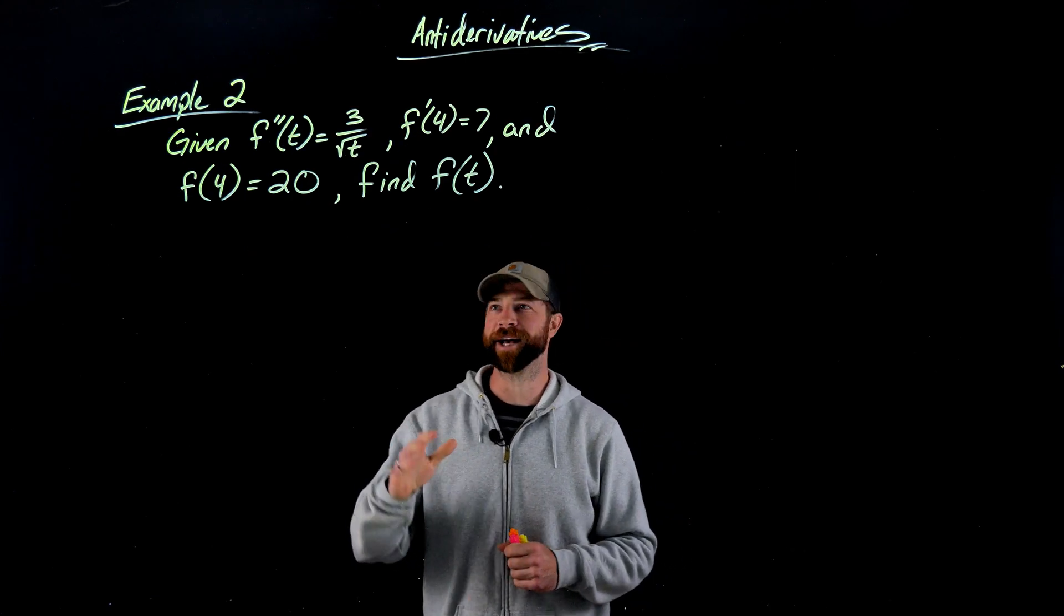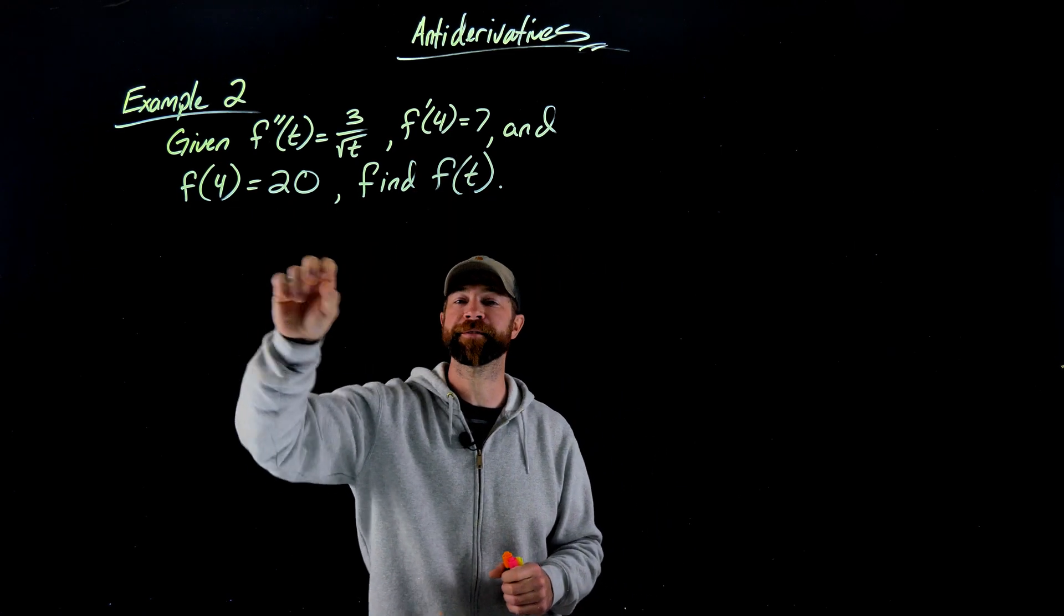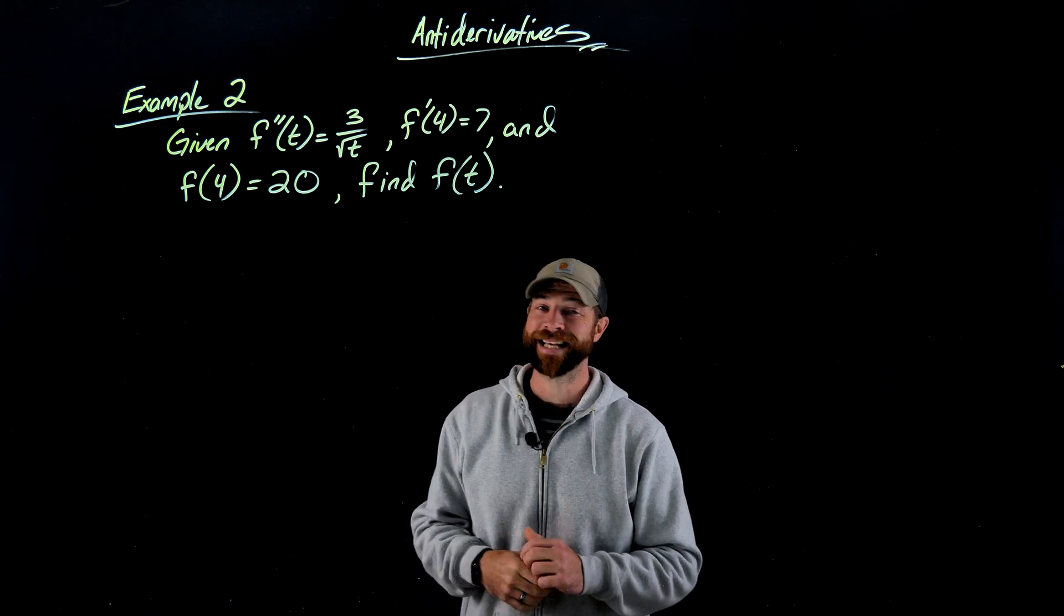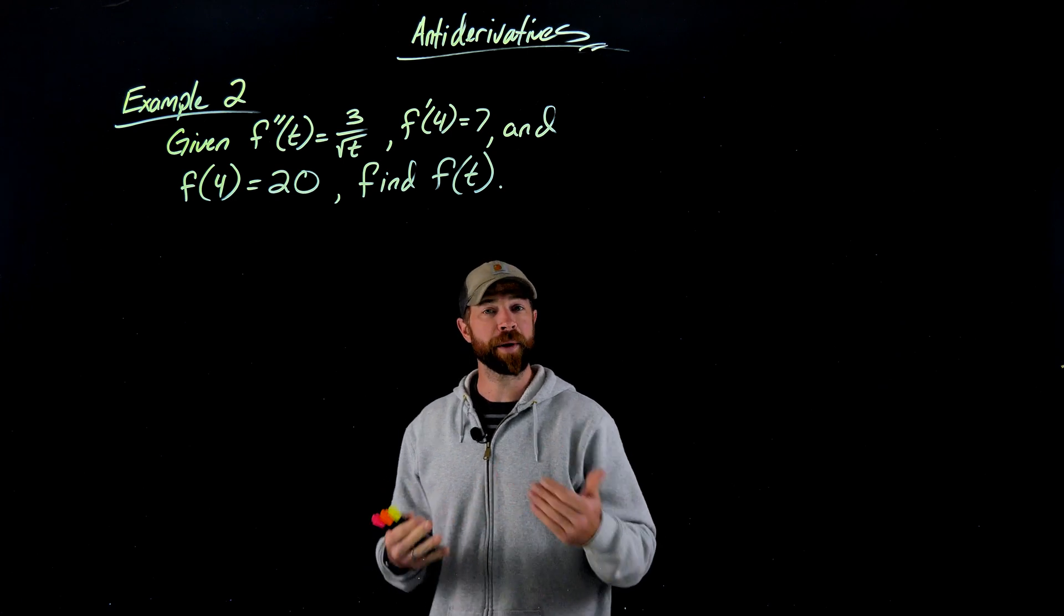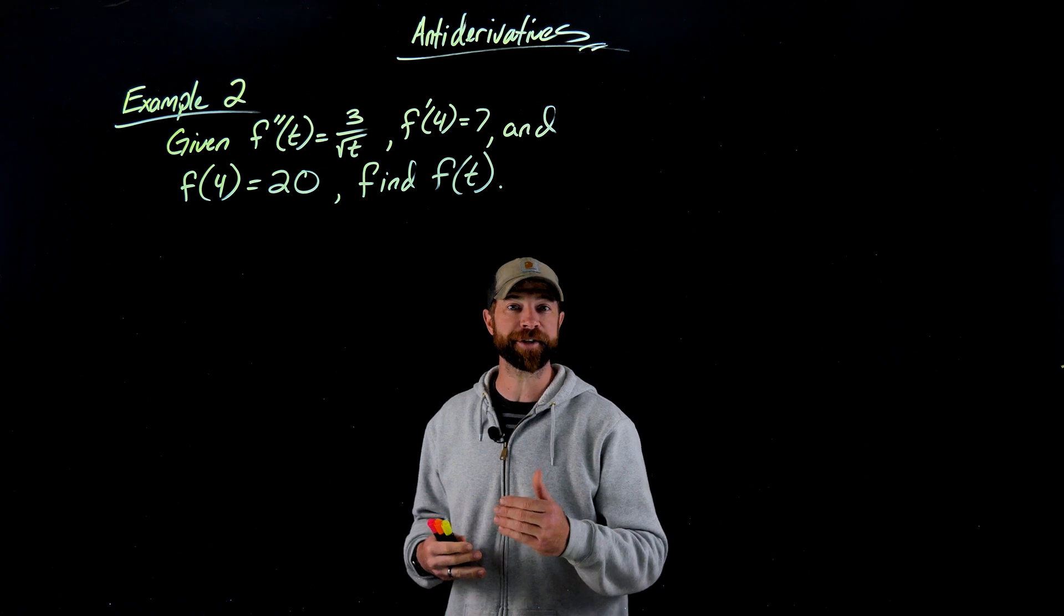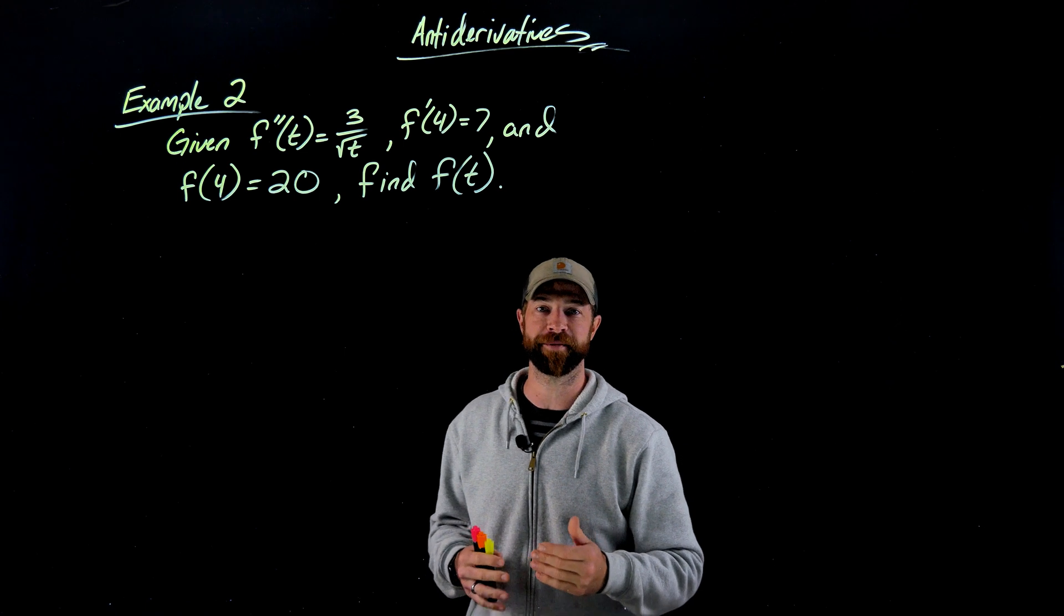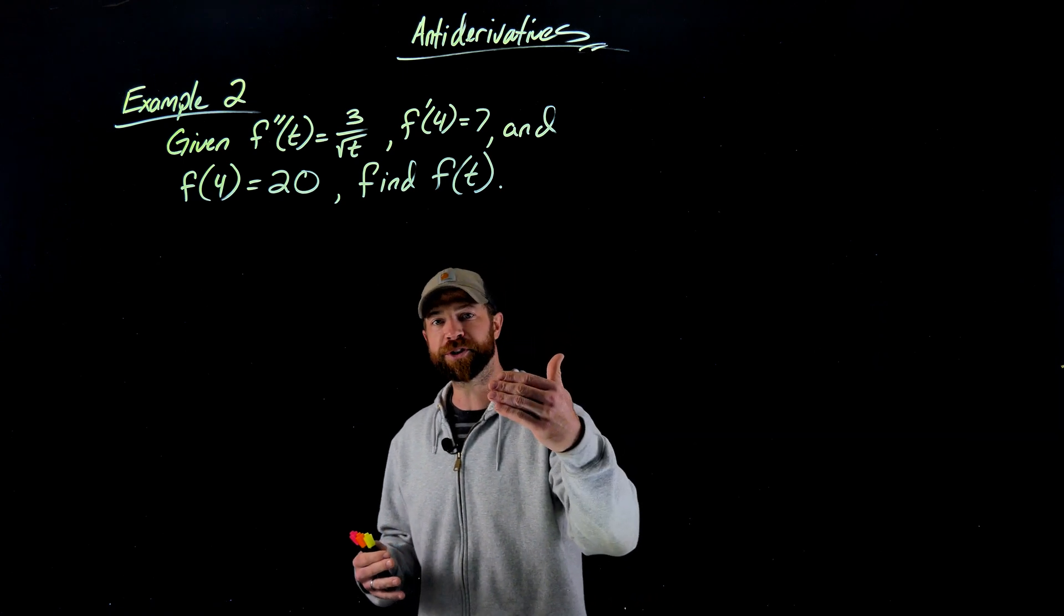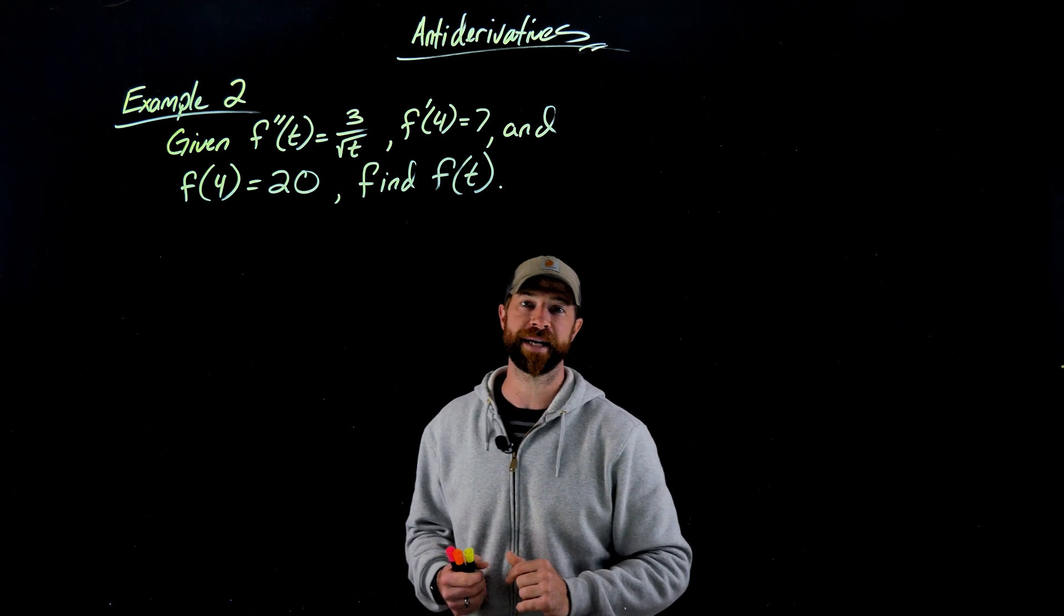In our second example, we're being given this second derivative, being told conditions about the first derivative and the original function, and being told to find f of t. In this case, we're going to do the same initial conditions type anti-derivative, but in two steps. The first step is to go from the second derivative and step back to the first derivative, replacing that c value using this information about the first derivative. Once we have the first derivative, we now have a normal initial conditions problem where we go from the first derivative to the original function, replacing that c value with this information right here.